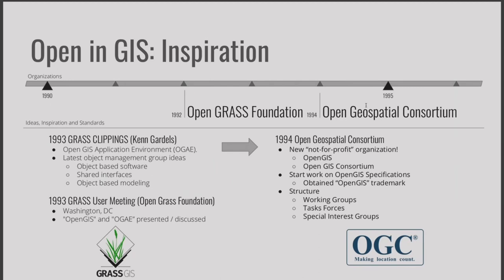One thing that's really nice at these conferences is people get together, explore ideas, and then we change the world. At a GRASS user meeting put on by the Open GRASS Foundation, that was the initial group that went on to create and form the Open Geospatial Consortium. This group put together all of those ideas about having common interfaces so we could share data between our software and started to standardize them.